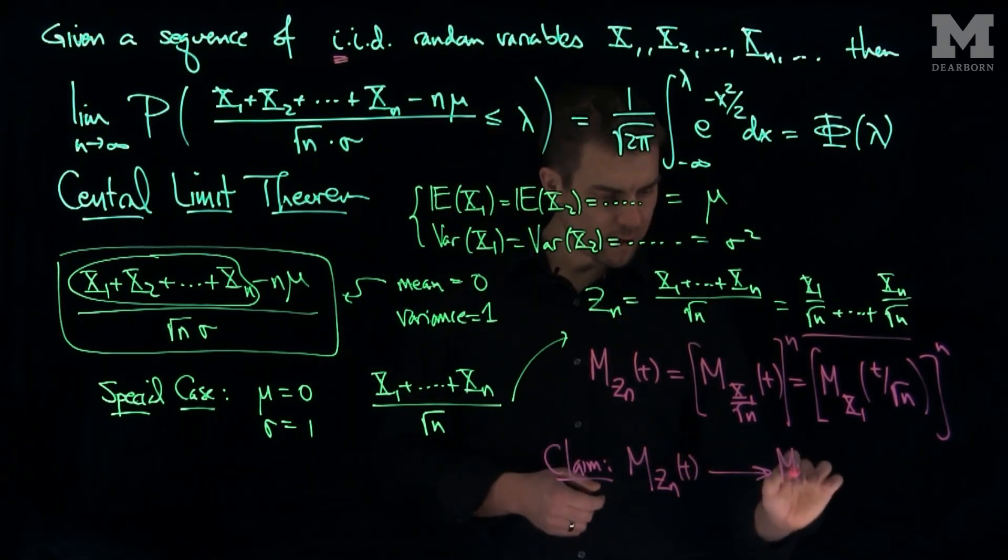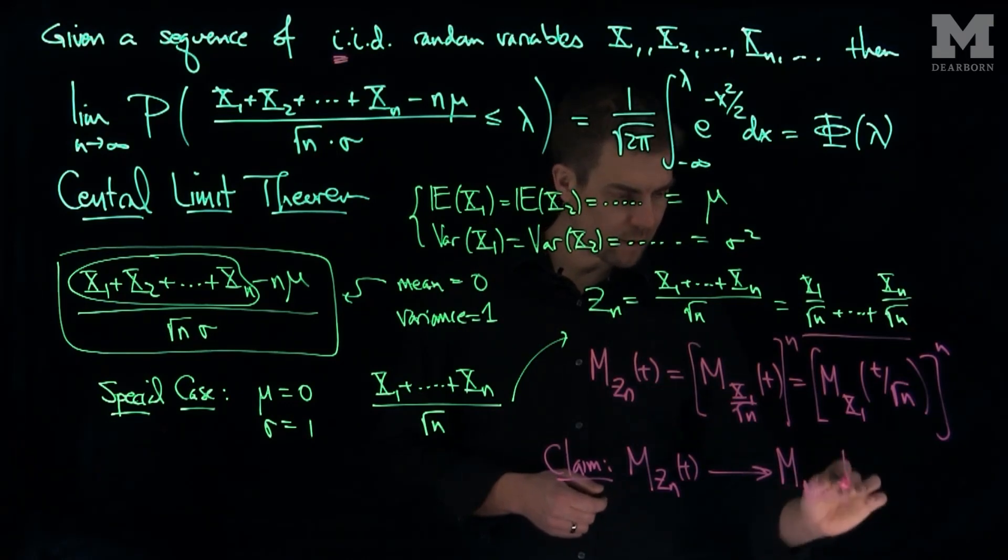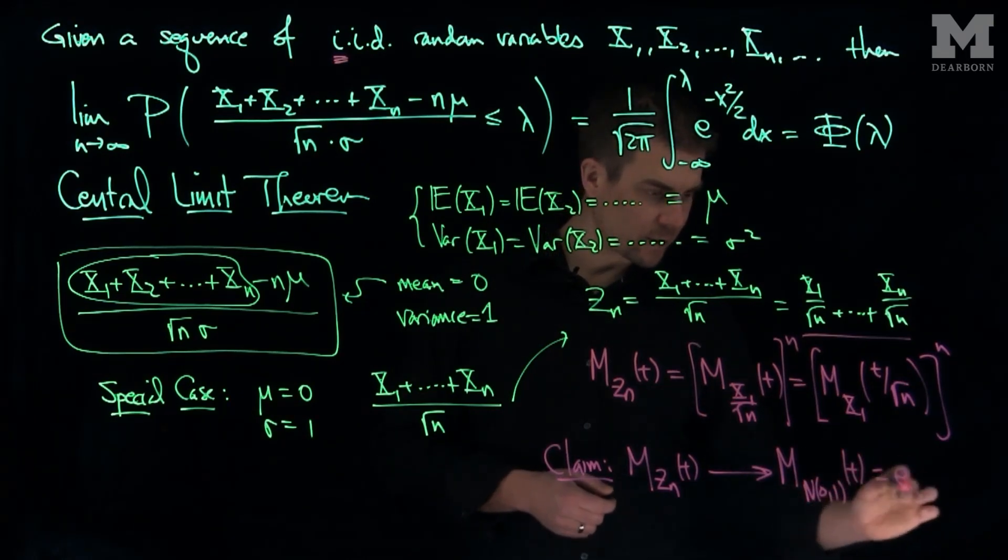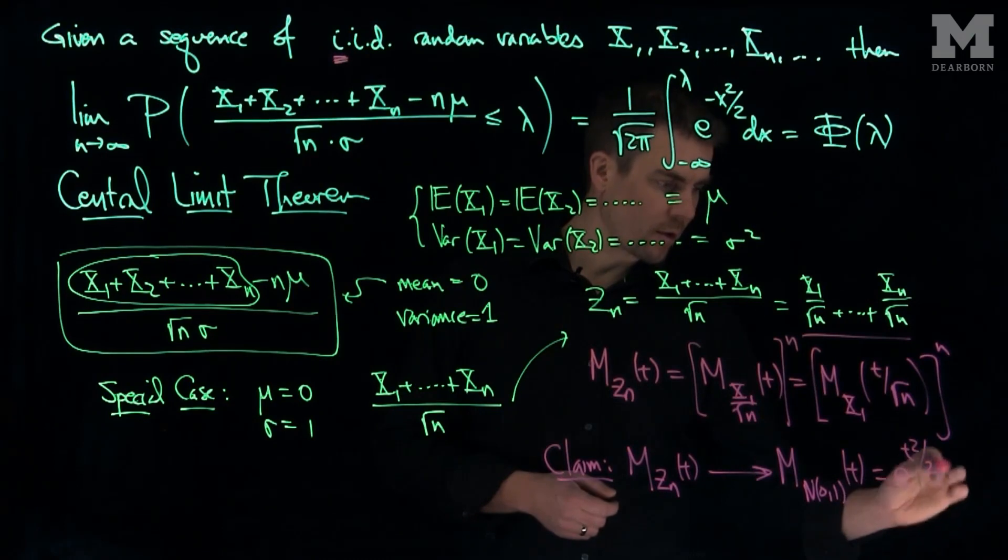The moment generating function of a normal (0,1) random variable at t, and that will be equal to e to the t squared over 2.